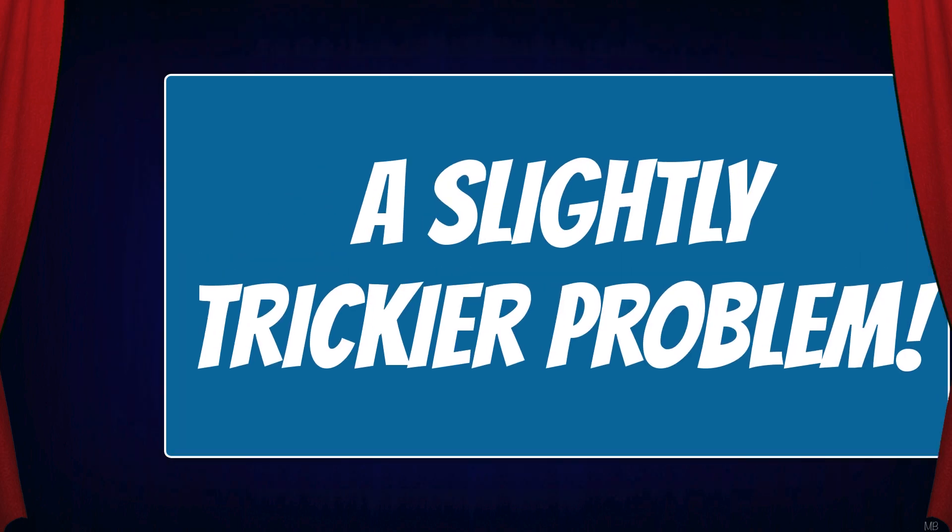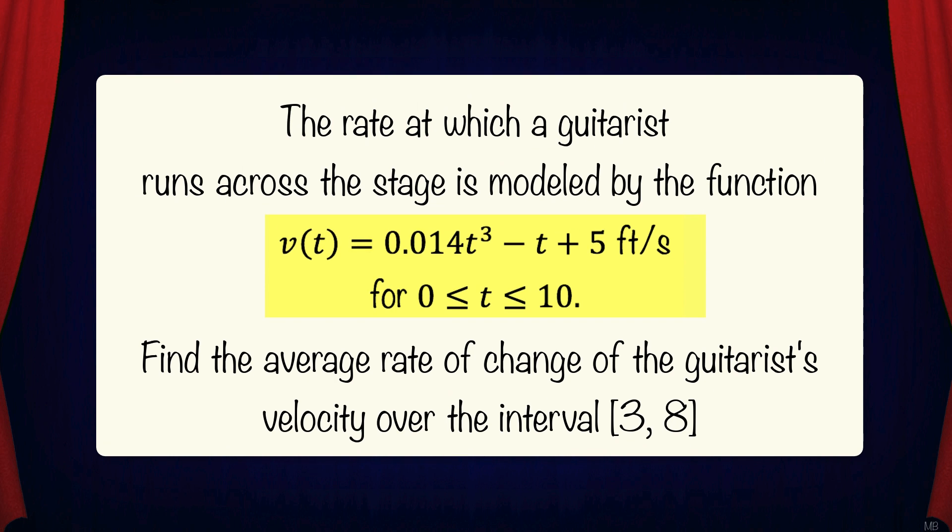Let's look at a slightly trickier problem. The rate at which a guitarist runs across the stage is modeled by the function v(t) shown below for the interval 0 to 10. Find the average rate of change of the guitarist's velocity over the interval [3, 8]. Pause the video and try the problem on your own.